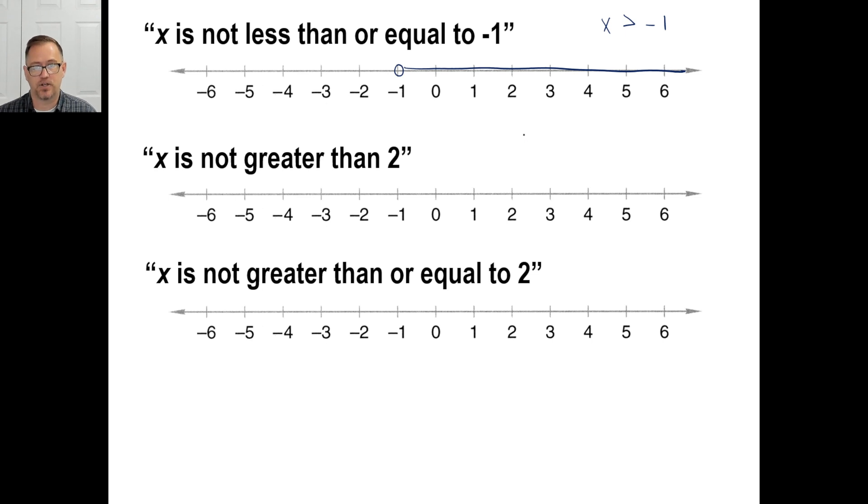X is not greater than two. There's my X. There's my two. It's not greater than two, which means it's less than two or it could be equal to two. So there's my two. It's filled in because it could be equal to two. It doesn't say it's not greater than or equal to. It just says not greater than. So there we go. It's less than. What a beautiful line. Pause and try the third one.